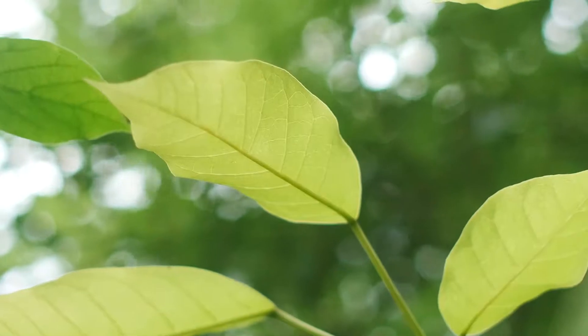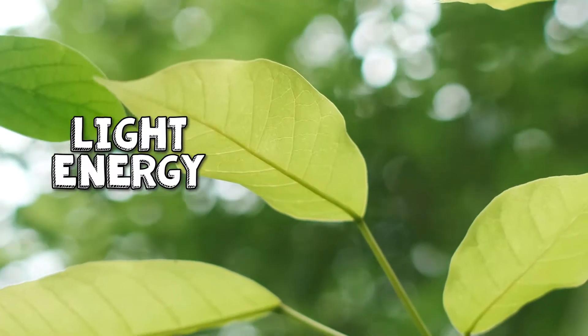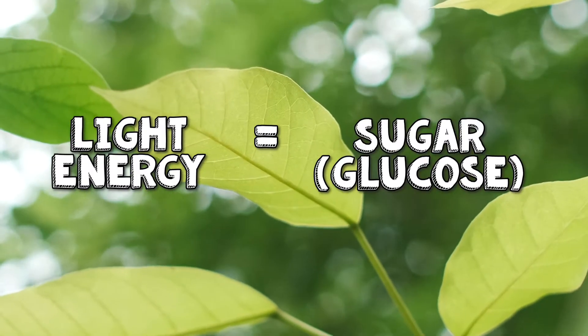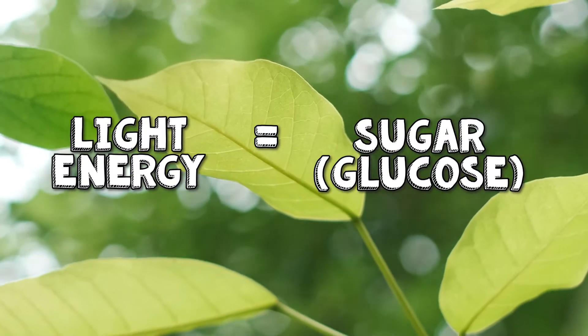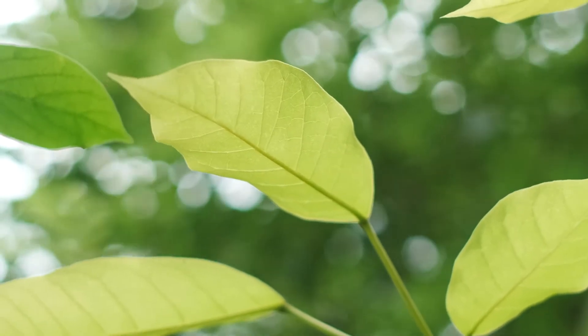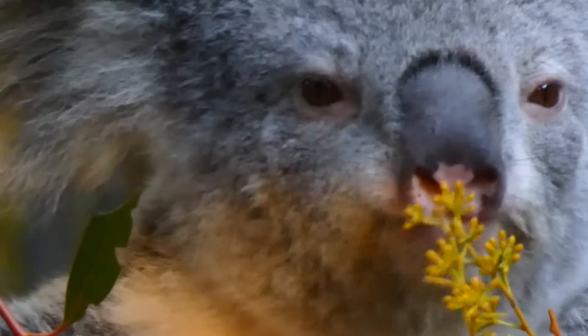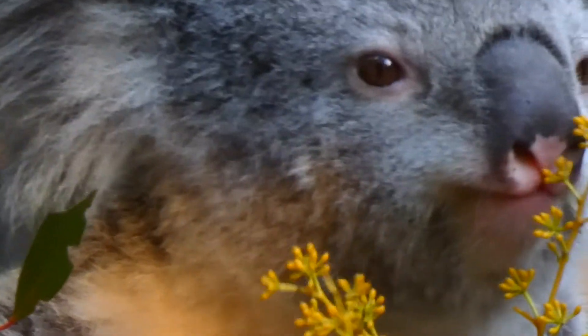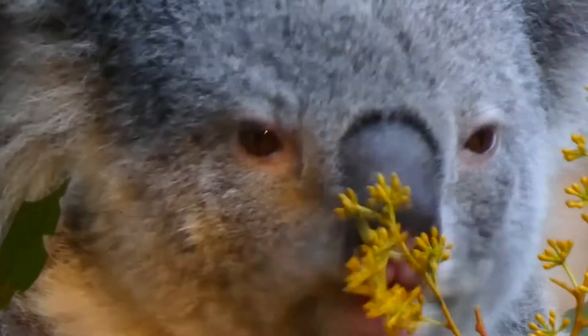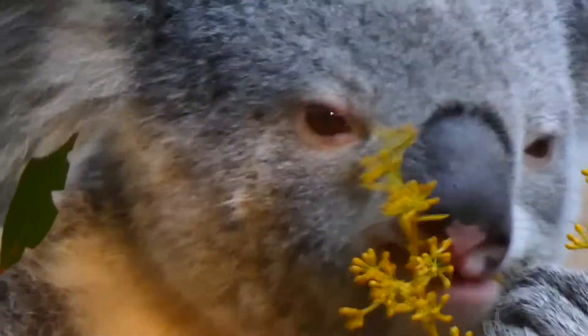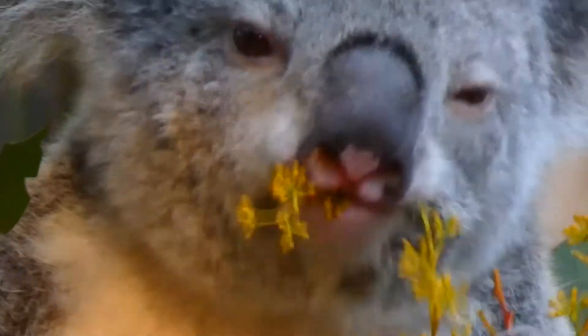Plants use light energy from the sun to create sugar in the form of glucose. This food isn't just important to the plant, but also to any other organism, like you for example, that might come along and eat it.